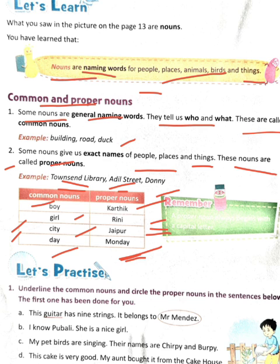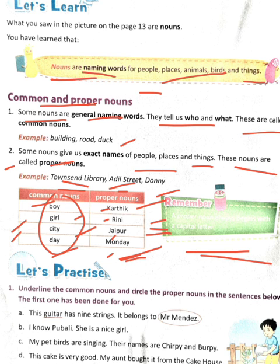No other day can have the name Monday. One important thing is that proper nouns always start with a capital letter. The first letter of a proper noun is always capitalized — like Karthik has K capital, Rini has R capital, Jaipur has J capital, Monday has M capital, because all of these are proper nouns. But for common nouns, the first letter is small — boy has b small, girl has g small, city has c small, day has d small.